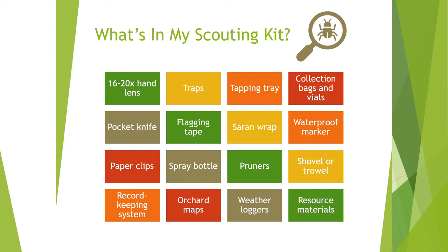We use paper clips for hanging pheromones, and a shovel or trowel if you need to dig down into the soil at the base of the tree. For record keeping, it can be as simple as a notebook and a pen, but there are also scouting apps you can download to record pest information on your phone.